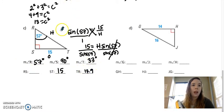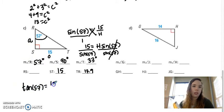If I want to find RS, I'm going to use tangent because that will give me opposite over adjacent. So tangent of 57 equals 15 over adjacent. And then I can solve that by taking 15 divided by tangent of 57. So that would be 9.7.